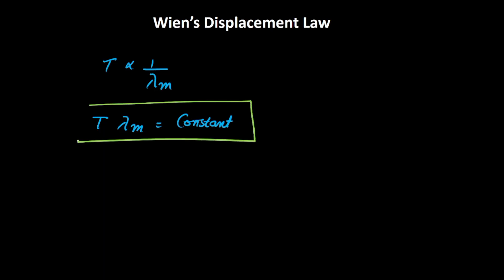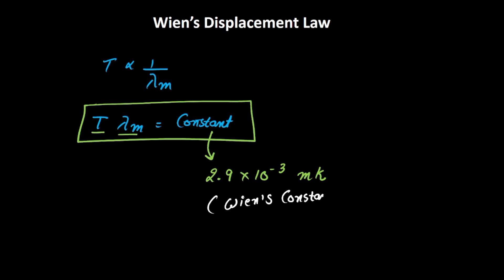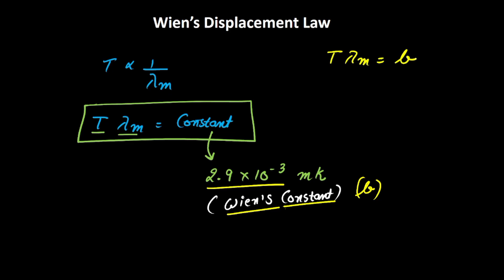This is what is called Wien's Displacement Law. The value of this constant comes out to be 2.9 times 10 to the power negative 3, and the units would be meter Kelvin — since the unit of temperature is Kelvin and lambda is measured in meters. This constant is what is called Wien's constant, also represented with small b. Thus the equation can be written as T times lambda m equals b. This is Wien's Displacement Law.